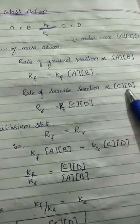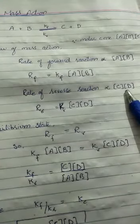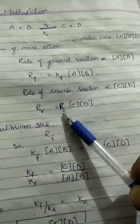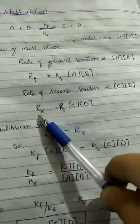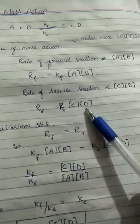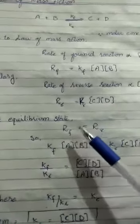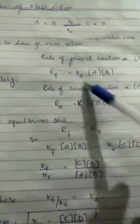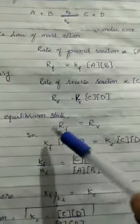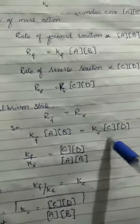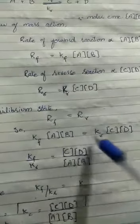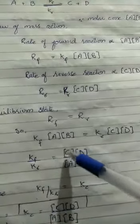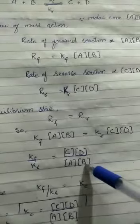Similarly, the rate of reverse reaction is directly proportional to the molar concentration of products. Replacing the proportionality sign with constant Kr, we get: Rr = Kr[C][D]. At equilibrium, rate of forward reaction equals rate of reverse reaction, so Kf[A][B] = Kr[C][D]. Rearranging, Kf/Kr = [C][D] / [A][B].